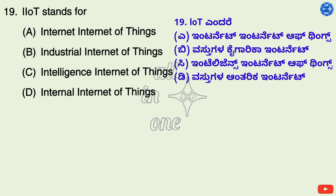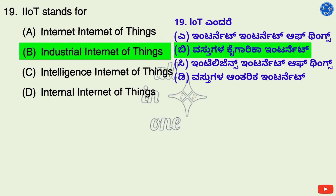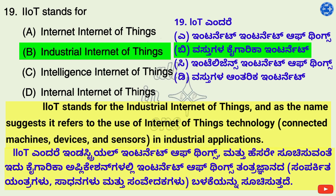Question 19. IIoT stands for — Options: A. Internet Internet of Things, B. Industrial Internet of Things, C. Intelligence Internet of Things, D. Internal Internet of Things. Right answer is B: Industrial Internet of Things. IIoT stands for the Industrial Internet of Things and refers to the use of Internet of Things technology, connected machines, devices, and sensors in industrial applications.